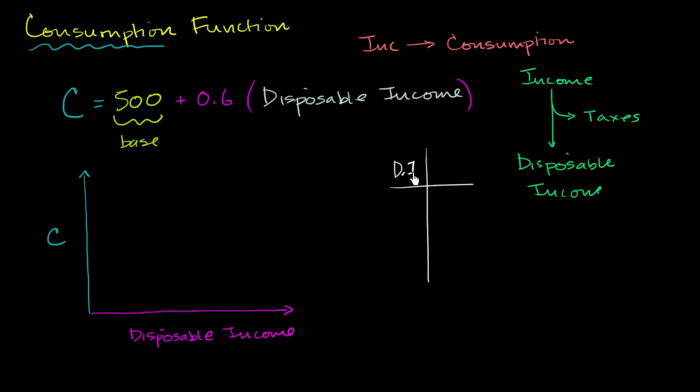If I have zero disposable income, and this is consumption, if there's zero disposable income, then this whole term right over here is zero. And then you have $500 billion, whatever our units are, of base consumption. And then that would correspond to this point right over here. In the horizontal axis, you don't move at all because it's zero. Vertical axis is 500. So you have 500.